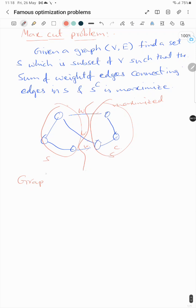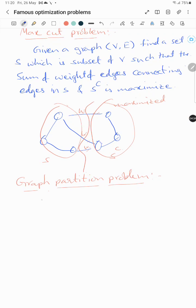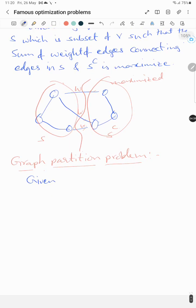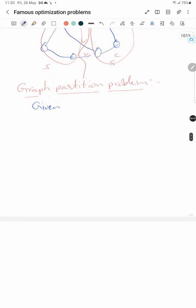Next one is graph partition problem. It is another NP-hard problem. Also there is no deterministic solution so we will use some optimization technique. In this, given a graph with V vertices and E edges, we need to find a partition.